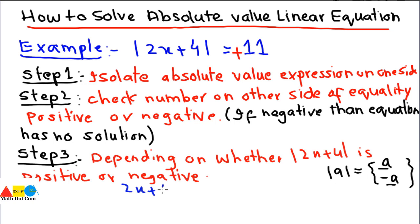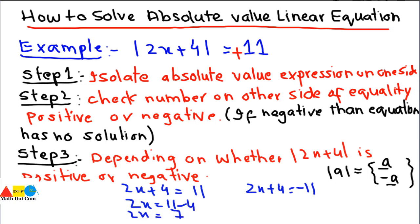The two equations are: 2x + 4 = 11 and 2x + 4 = −11. Solving the first: 2x = 11 − 4, so 2x = 7, and x = 7/2. Solving the second: 2x = −11 − 4, so 2x = −15, and x = −15/2. We now have two roots of this equation.